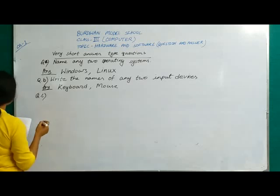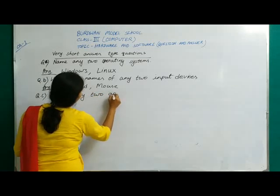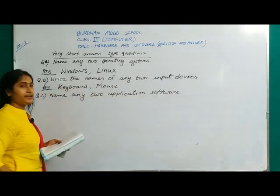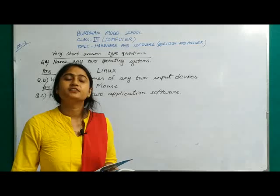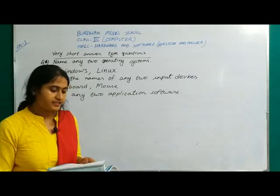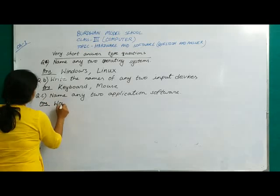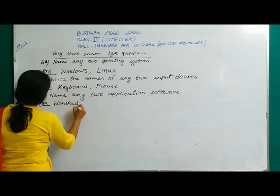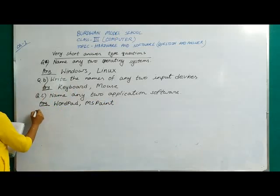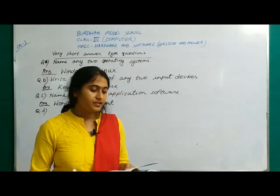Question number C: Name any 2 application software. Wordpad, Notepad, MS Word, MS Paint — these are all examples of application software. Write any 2: Wordpad and MS Paint, or Notepad and MS Word.